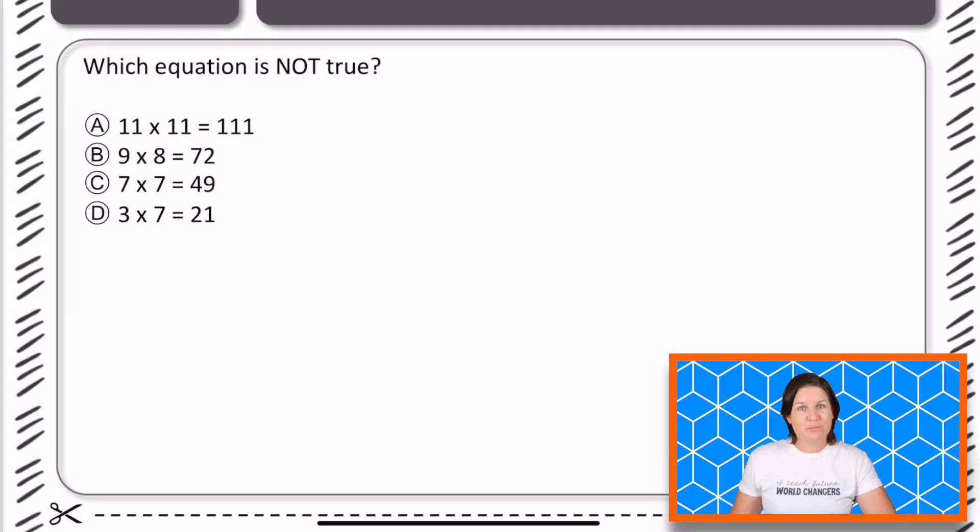All right fourth grade, here's your problem of the week. It says which equation, that means that we have an equal sign, is not true. We're looking for the one that is wrong.